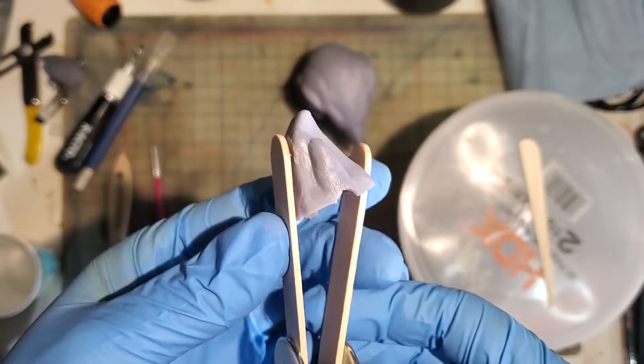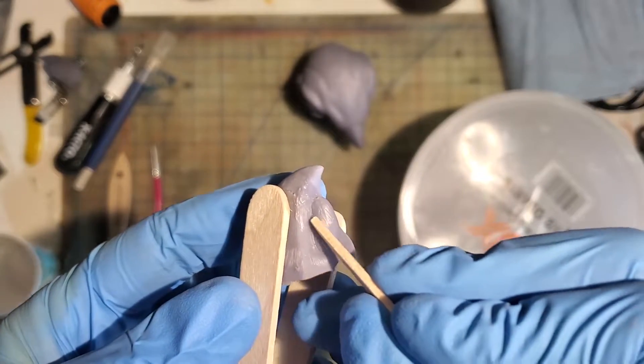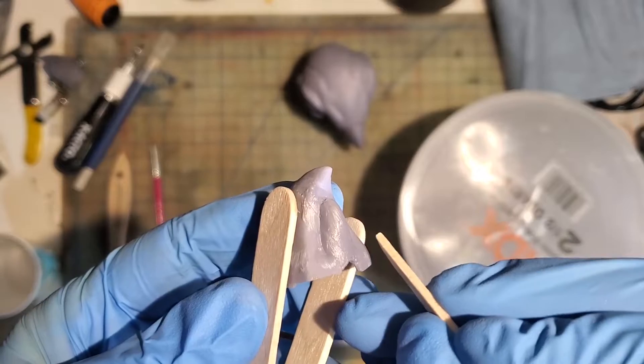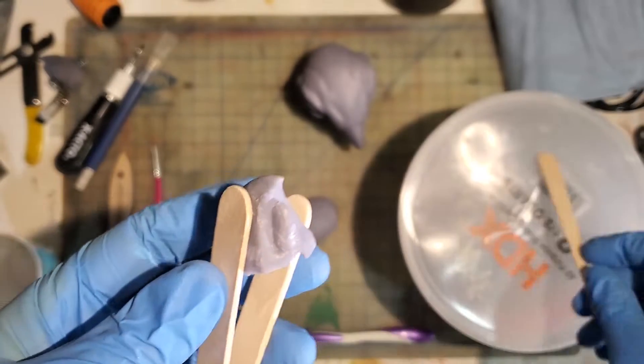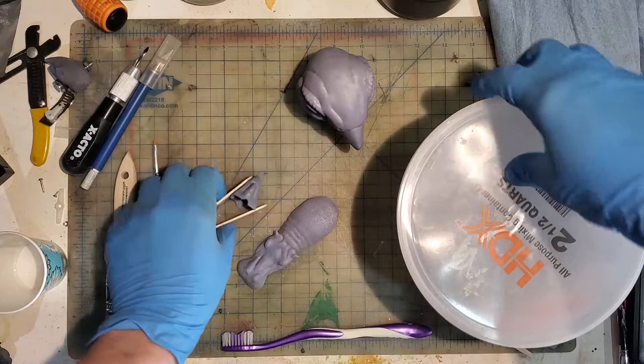An easy way to check for a complete cure is to take a popsicle stick or a toothpick and rub over your repaired area. A well cured repair won't show any new scratches from the soft wood.